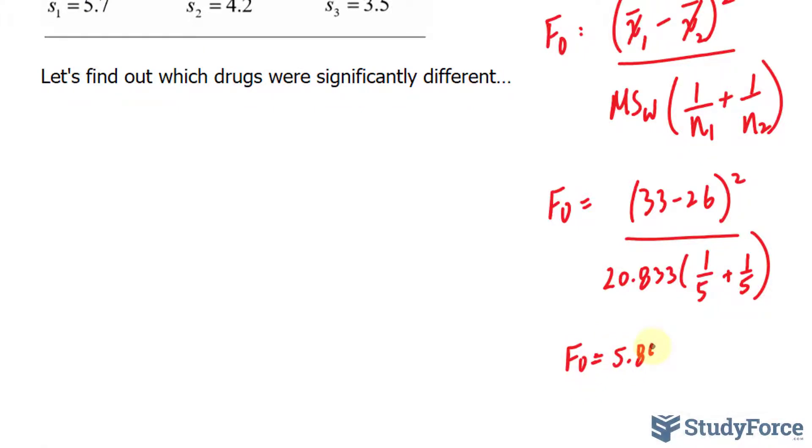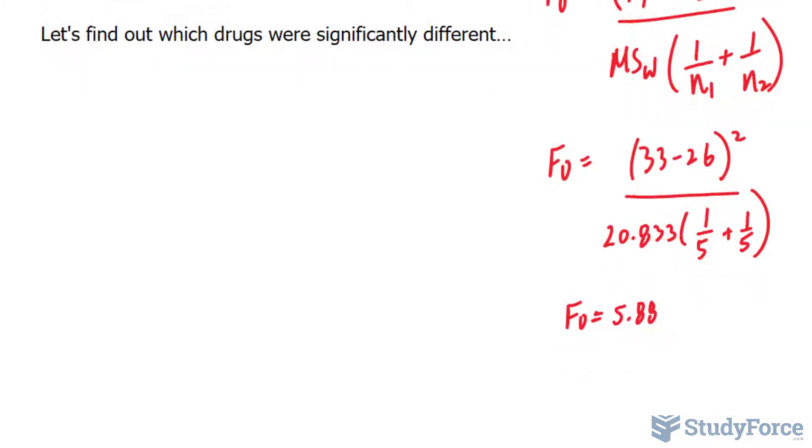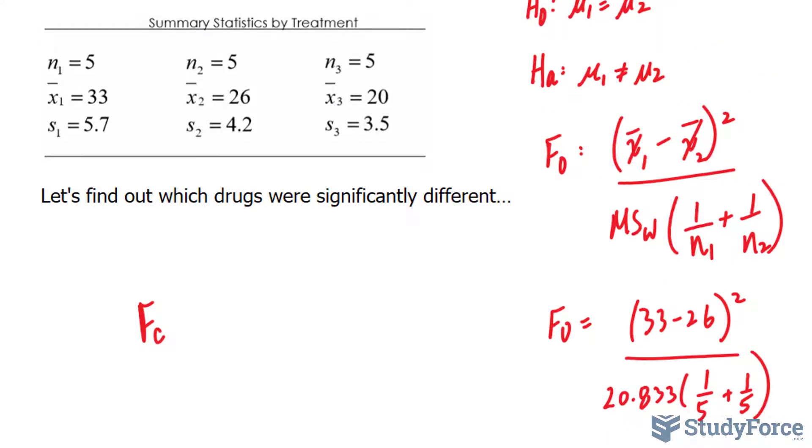Next we have to make a decision by comparing this value to the F critical. The F critical is found a little bit different than the way you find it within an ANOVA test. What you do is you take K minus 1, where K represents the number of groups, we have 3 groups,